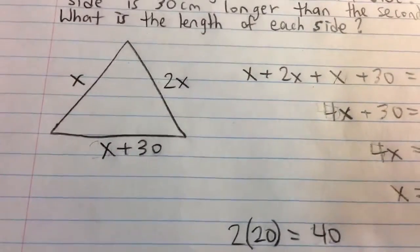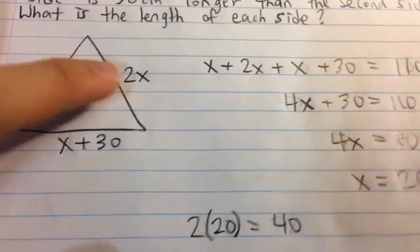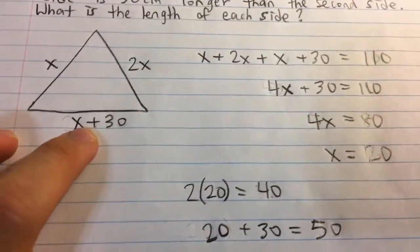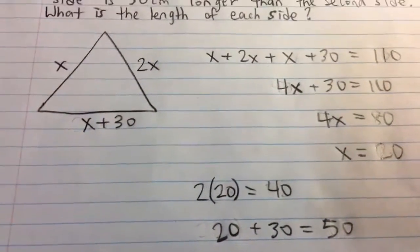And so now, we can plug it back in, we notice that this side is just 20 centimeters. This side is two times 20 centimeters, that's 40 centimeters. And the side on the bottom is 20 plus 30 centimeters, that's 50 centimeters.